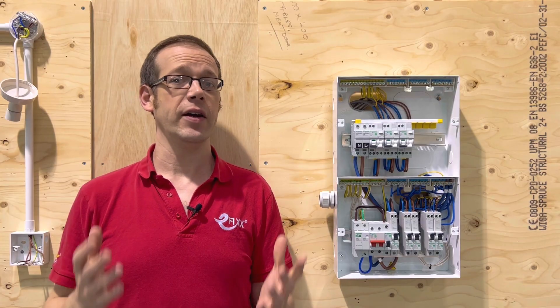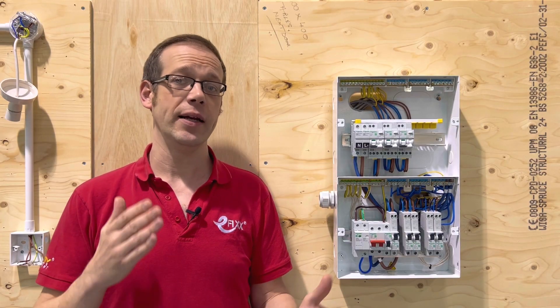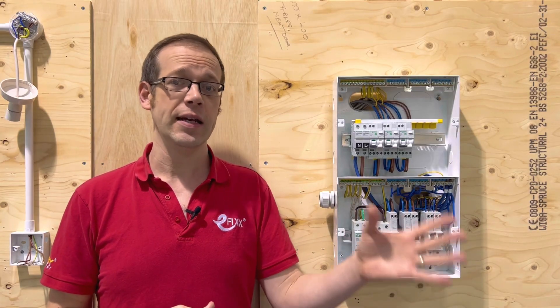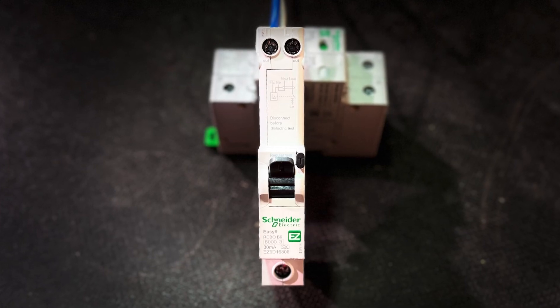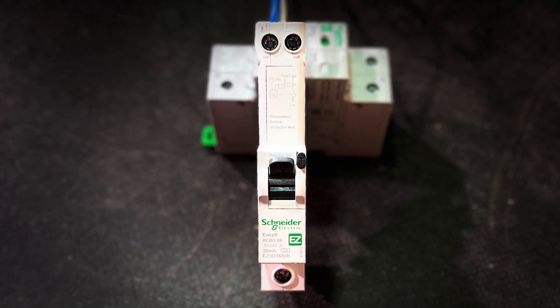To overcome this you can either have an RCD and an MCB wired in series with each other or have them combined into a single device that offers residual current and overcurrent protection which is what we call a residual current breaker with overcurrent or RCBO for short.